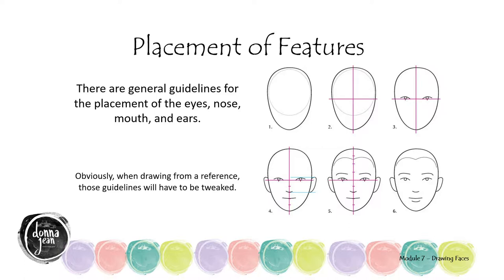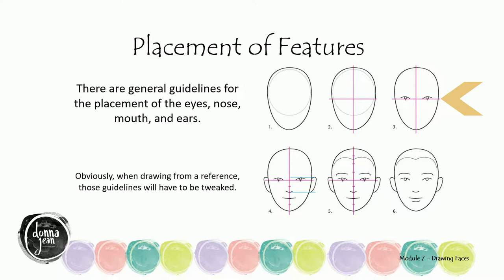We are now ready to get into the placement of features on the face. There are definite guidelines for the placement of each element. The head is essentially an egg shape — rounder at the top, smaller at the bottom. The face is divided vertically and horizontally in half to help you place the facial features in the correct spot. The eyes line up with the center horizontal line and are equidistant from each other and from the side of the face. I make tick marks across that center line equally distant from each other.